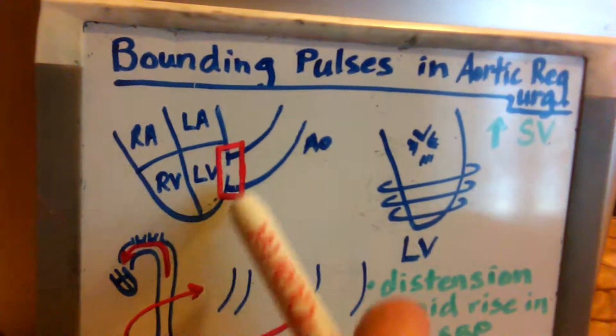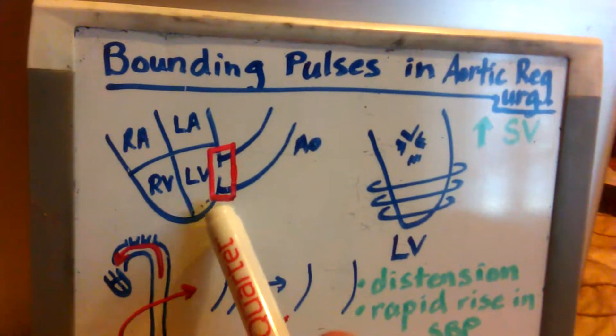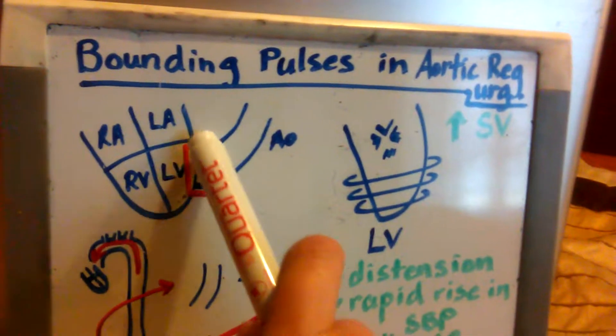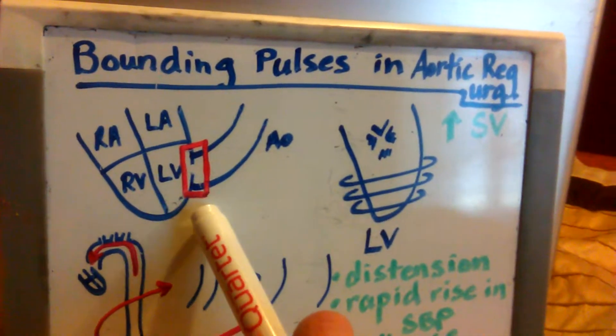But if this is your heart, this is your right atrium, right ventricle, left atrium, left ventricle, and this is the aorta coming off of the left ventricle, this right here in the red box would be your aortic valve.